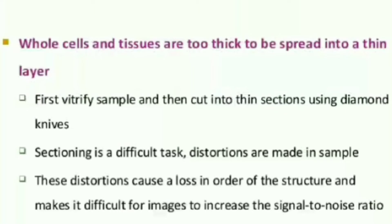After vitrification, the second step is cryo sectioning, where we section the cells or tissues. Since the whole cell or tissue is thick, we section it to make it thin. For sectioning, we use a diamond knife. This sectioning process is a difficult task and can result in loss of structure.